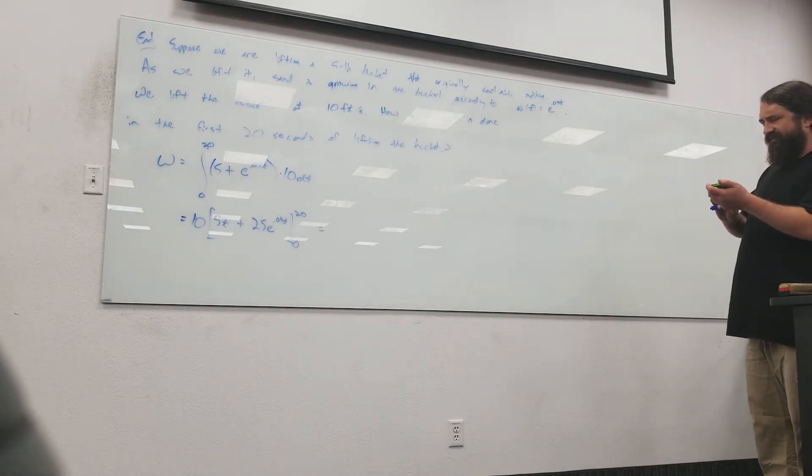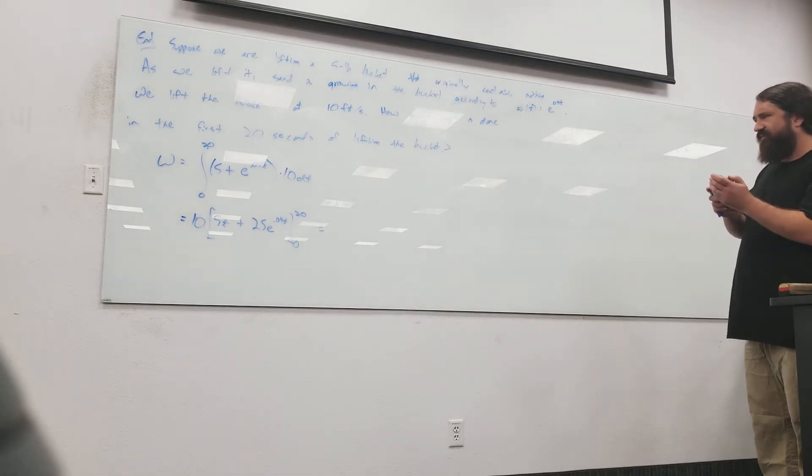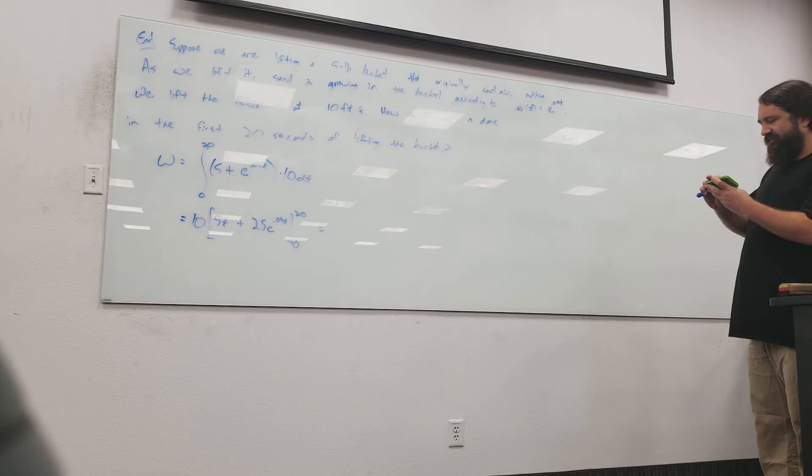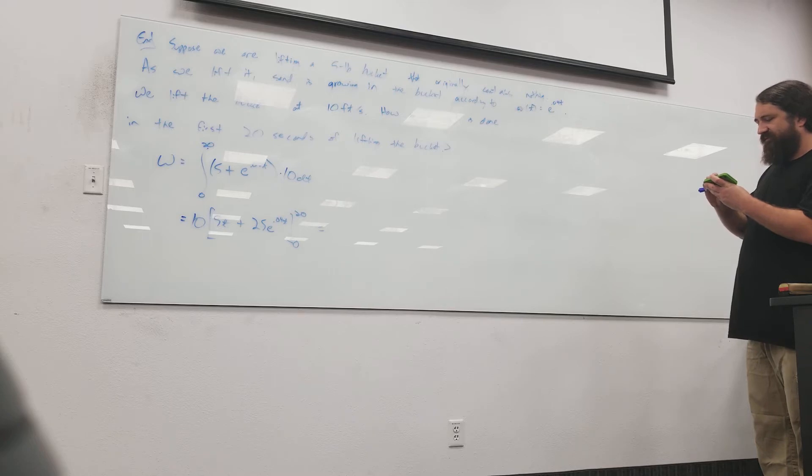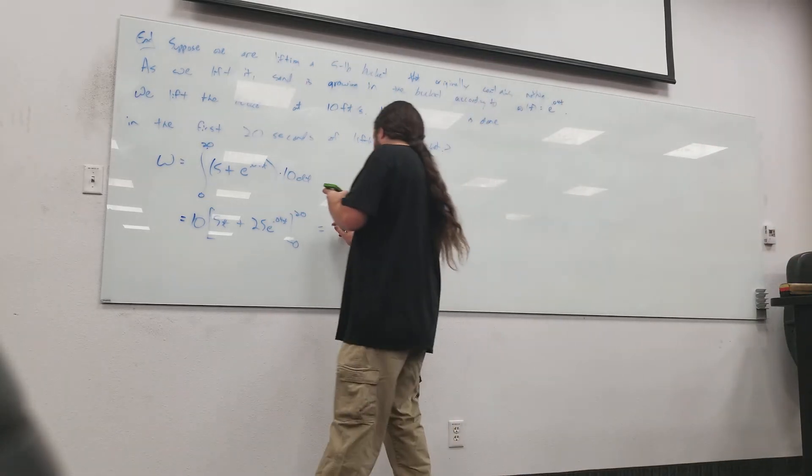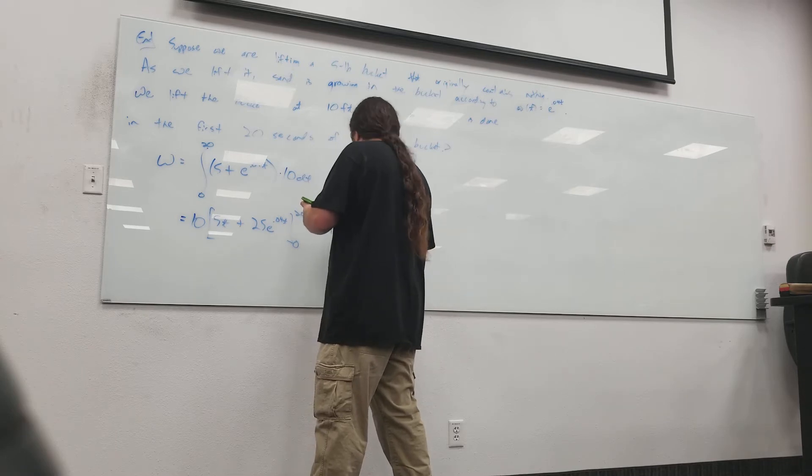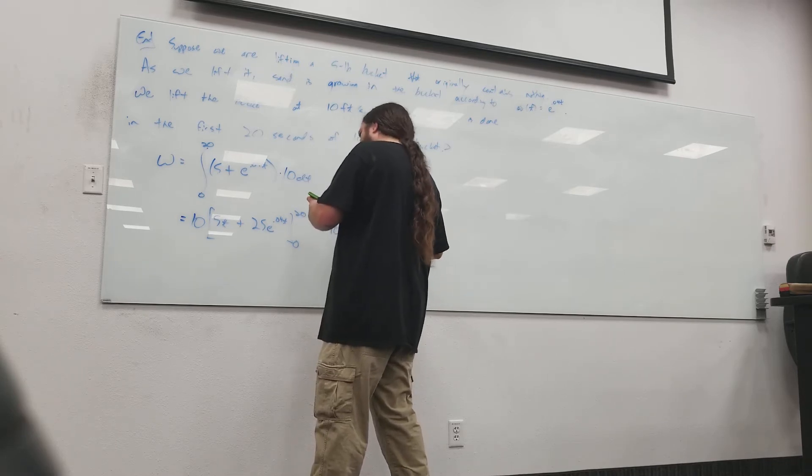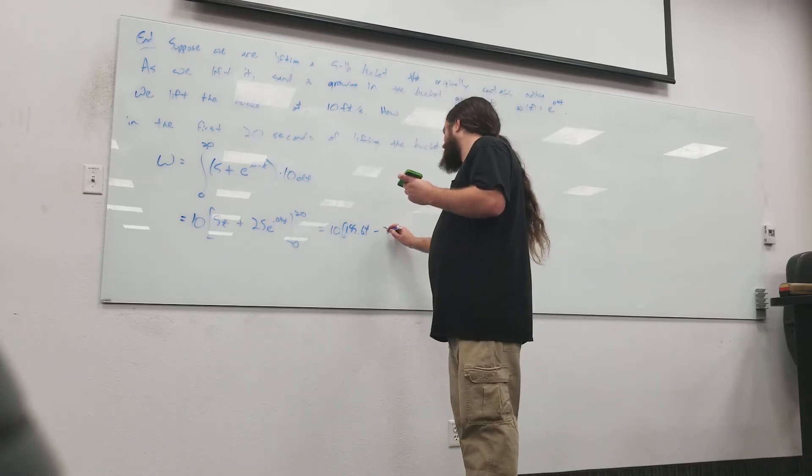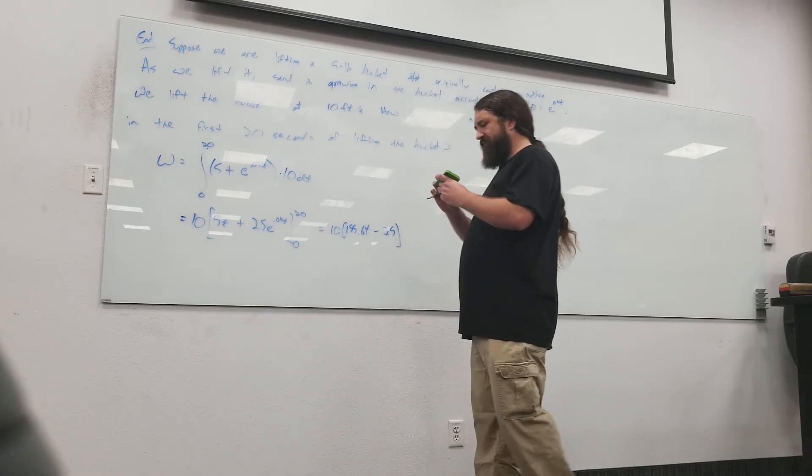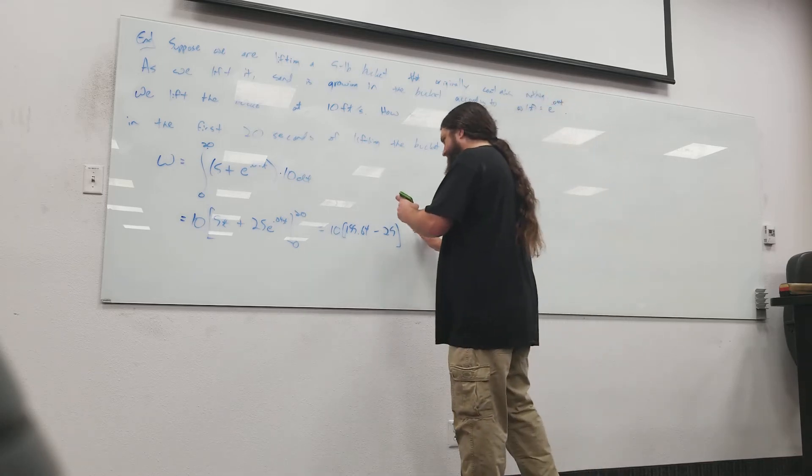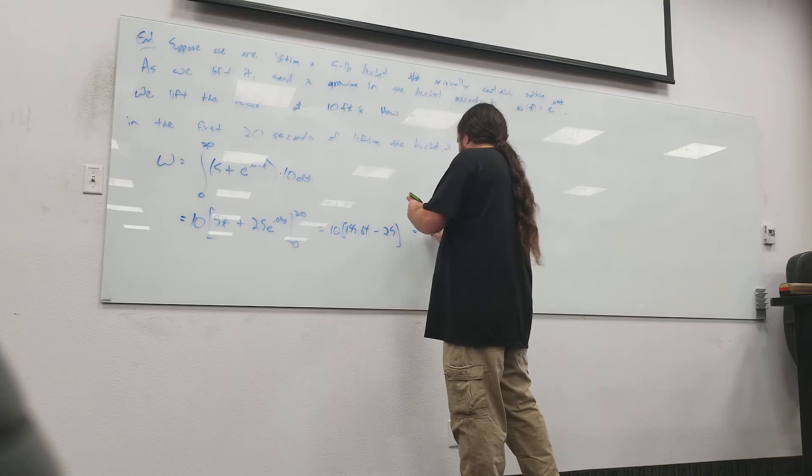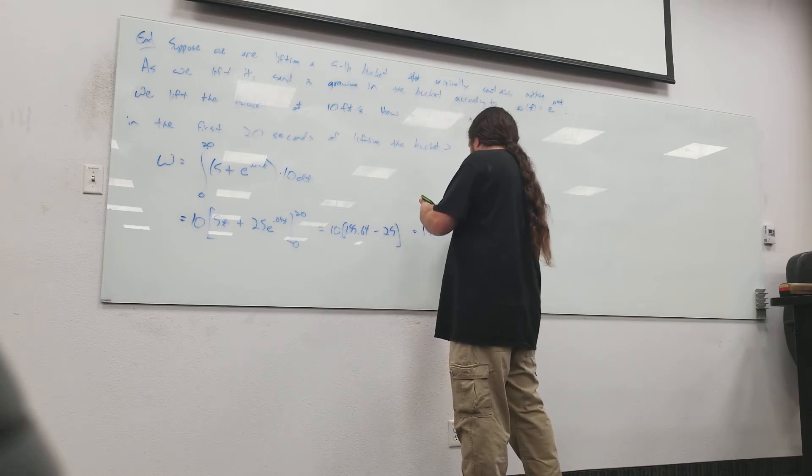So, let's see. 5 times 20 is 100. And 0.04 times 20, 0.8. E to that. And about 0.04. That's 55 plus 100. So, we've got 10 times 155.64 minus 25. I'm getting 1306.39. What's the unit on this?